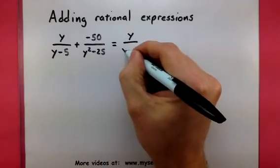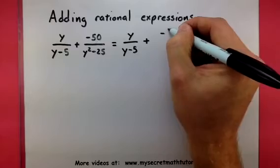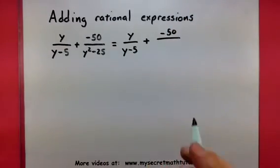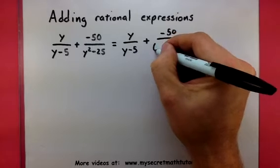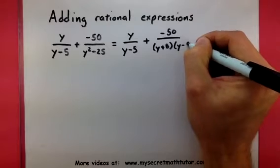So y minus 5 does not really factor, so I'll leave that just as it is. But when I look at y squared minus 25, that does factor. That factors into y plus 5 and y minus 5.